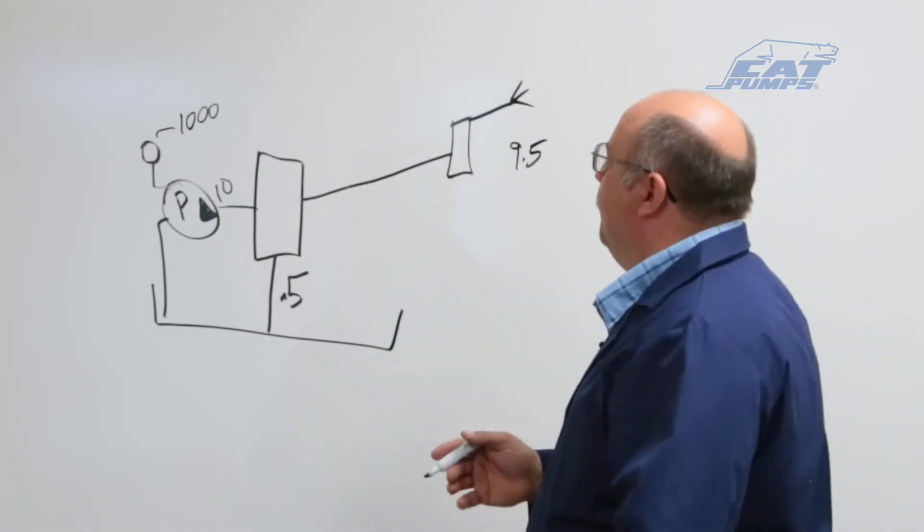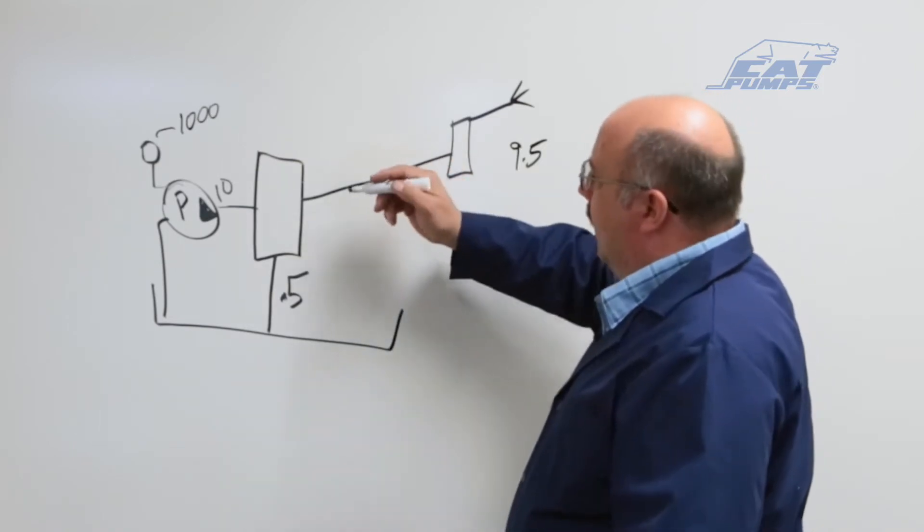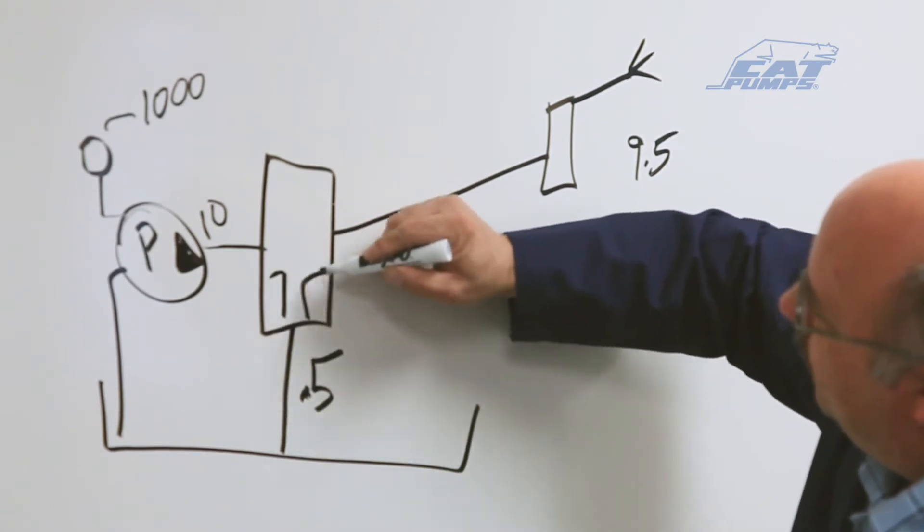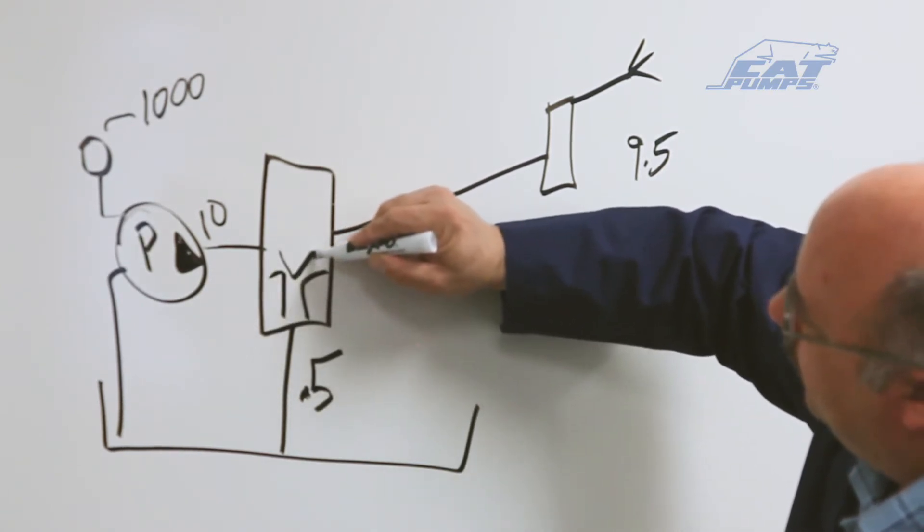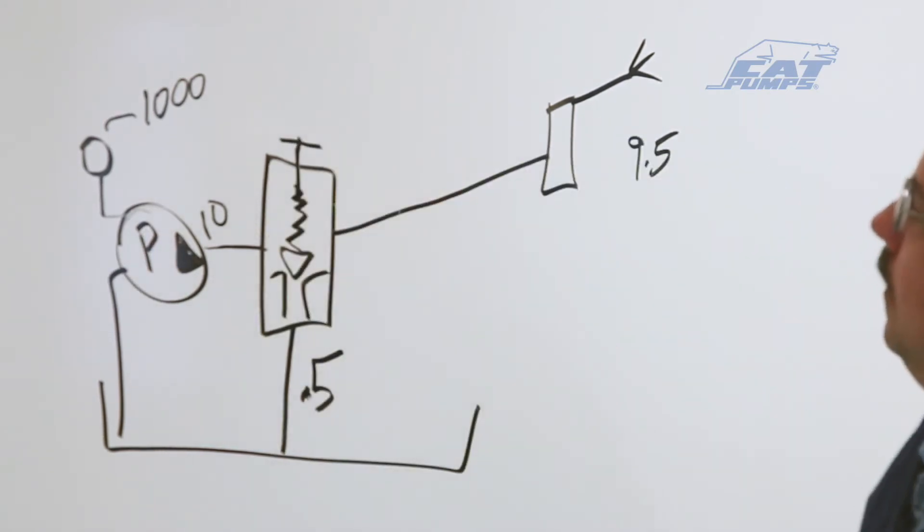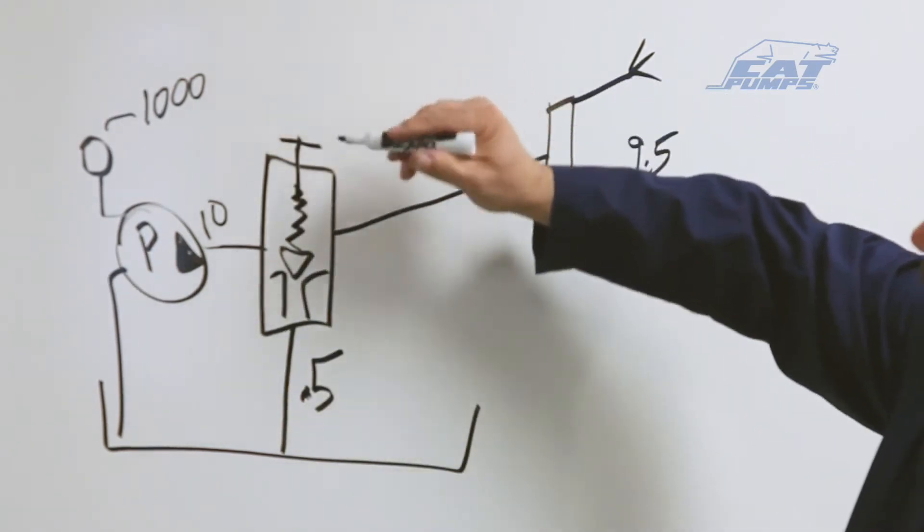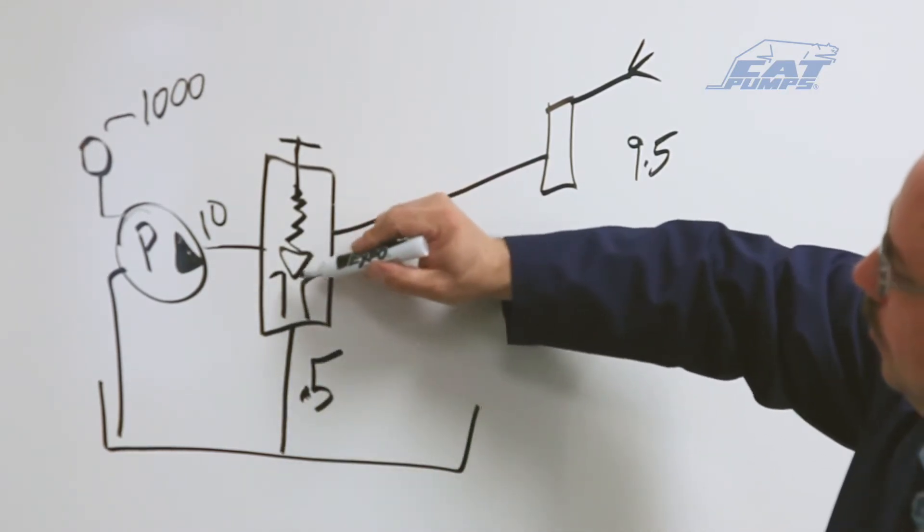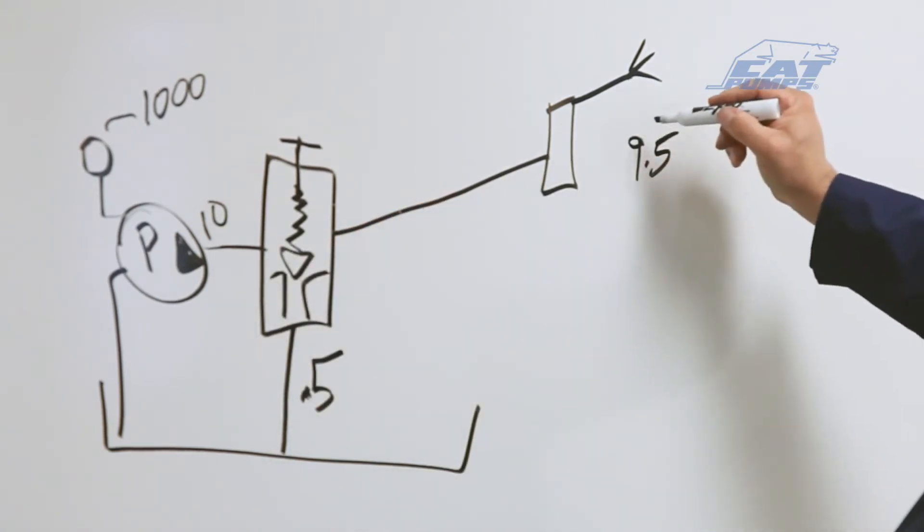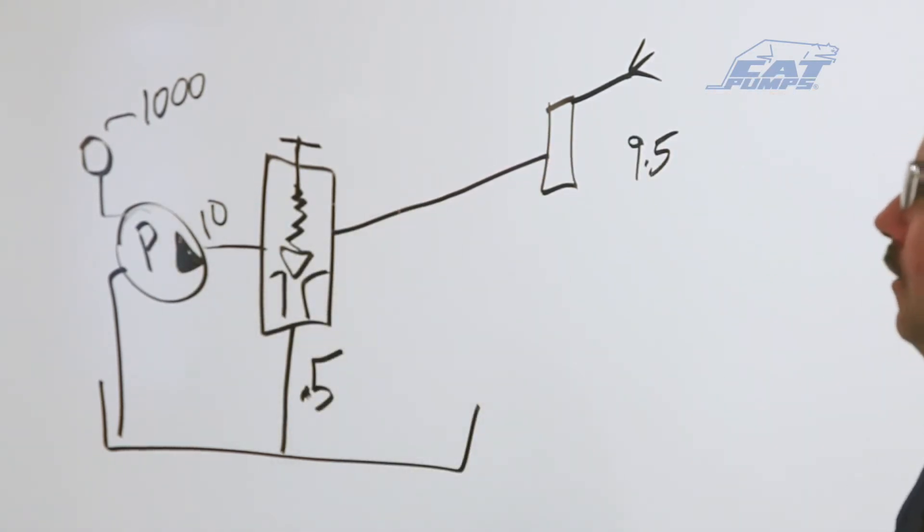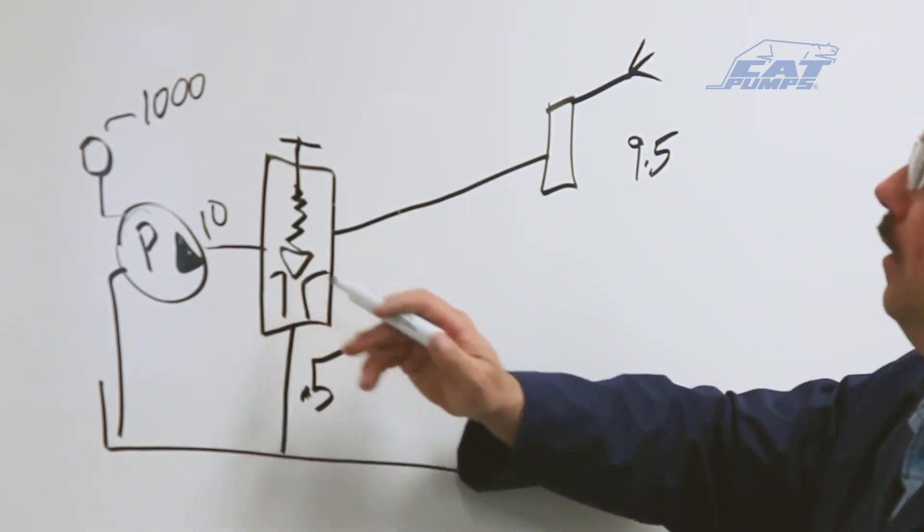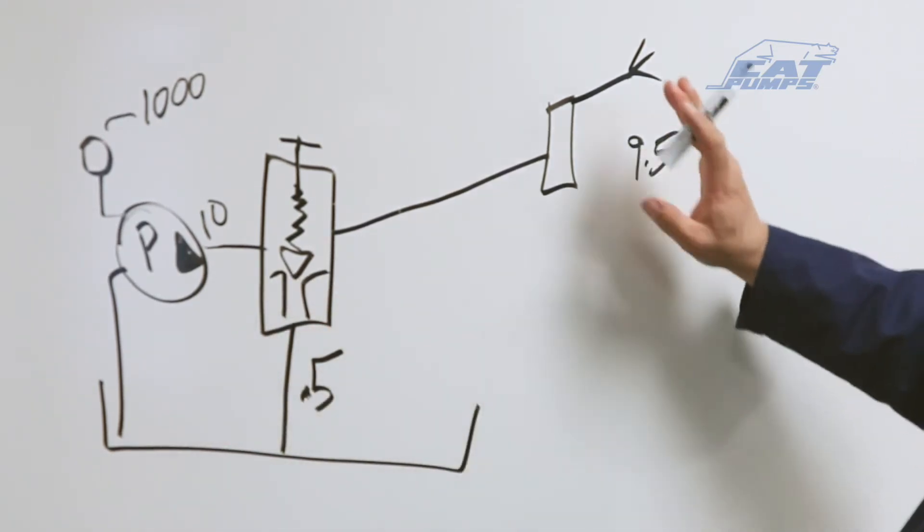What can happen though is inside the regulator, you'll have a seat in here, a poppet with a spring that's adjustable. When you adjust this adjustment, what it does is close this poppet against the seat to put a small restriction here so that most of the flow goes out the wand and very little goes down to your bypass. When this is running, you can tell that this would be a very small area because most of your flow is coming out here.